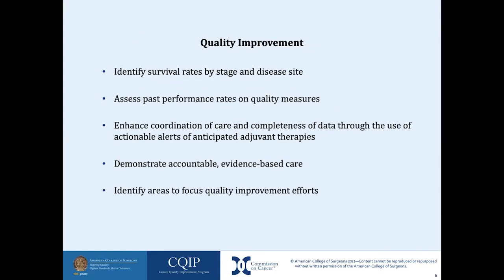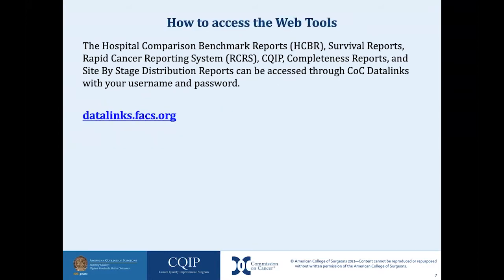The tools also provide quality improvement capabilities: identify survival rates by stage and disease site, assess past performance rates on quality measures, enhance coordination of care and completeness of data through actionable alerts of anticipated adjuvant therapies, demonstrate accountable evidence-based care, and identify areas to focus quality improvement efforts. The web tools can be accessed through COC Data Links with your username and password at datalinks.facs.org.